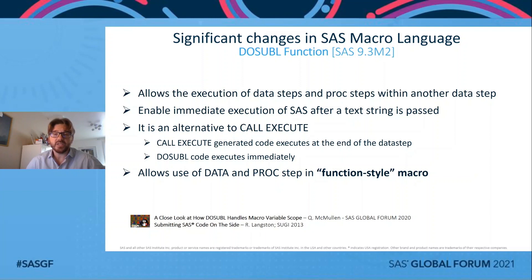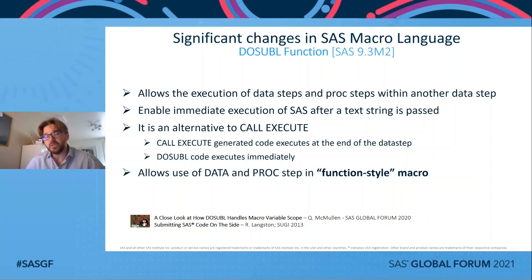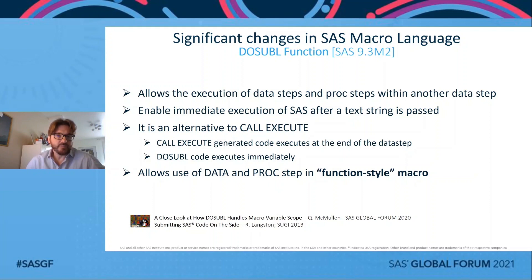The last SAS 9 feature I want to quickly cover — introduced more precisely with SAS 9.3 maintenance 2 — is the CALL SUB function. This is a very powerful addition, and it makes possible the execution of SAS code on the side while your data step is still running. The SAS statements are executed immediately, which makes a big difference from the traditional CALL EXECUTE. With DO-SUB, you can now develop function-style macros — macros that can be used within a SAS statement — and this macro also makes use of DATA and PROC steps, not only macro statements. This is something that previously was either impossible or extremely difficult to implement.